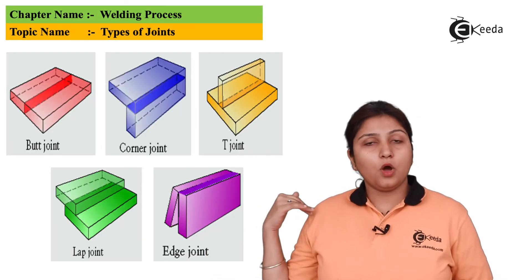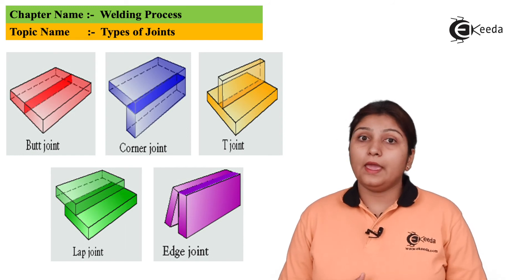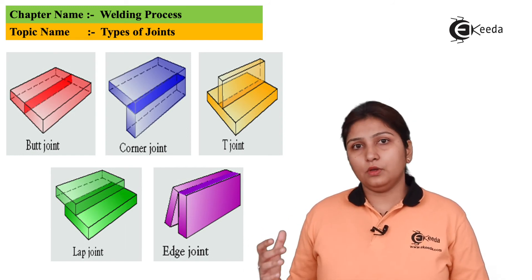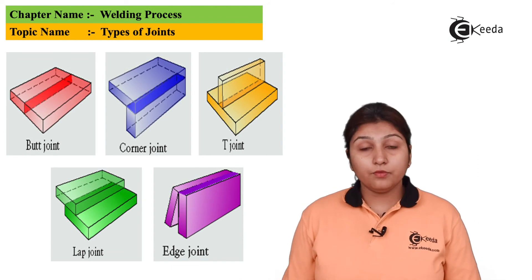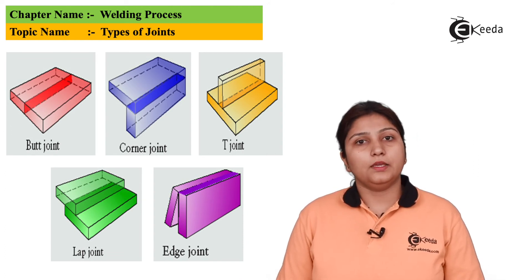In this side you can see all the five types of joint: butt, corner, T, lap, as well as edge joint. It is a pictorial view of all the kinds of joints. Thank you for watching this video. Stay tuned with eKida and do subscribe to our channel.